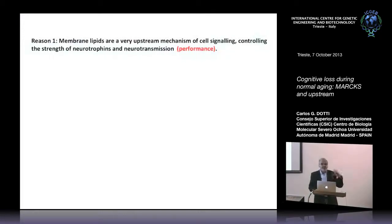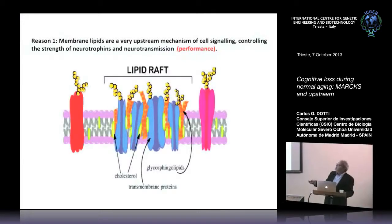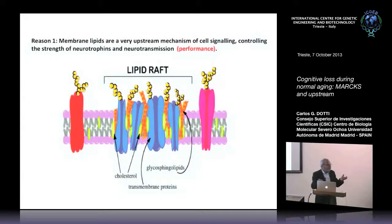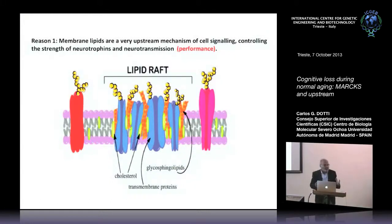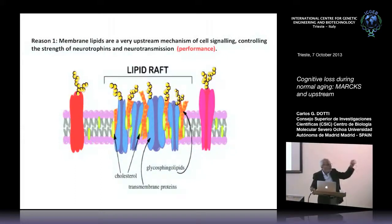Maybe these platforms are perturbed. This is a drawing of how membrane receptors are embedded into microdomains in the plasma membrane called lipid rafts — a mix of cholesterol, sphingomyelin, gangliosides, and transmembrane proteins. All cells' plasma membranes are organized in microdomains, and these are signaling platforms.